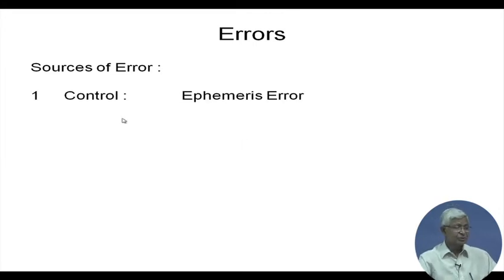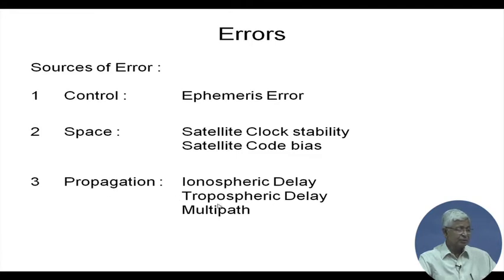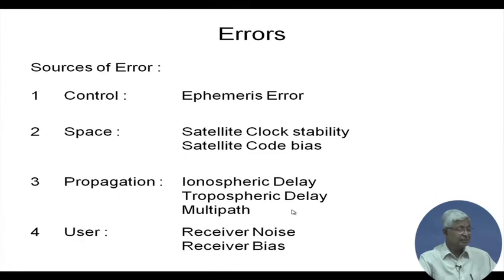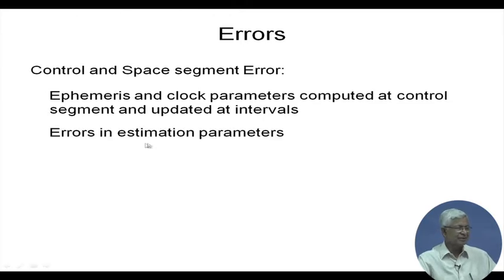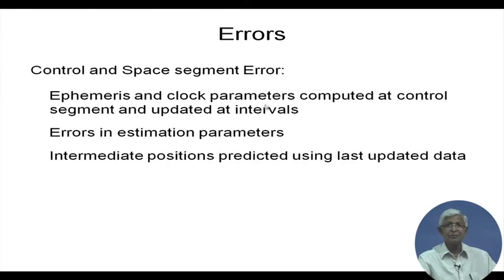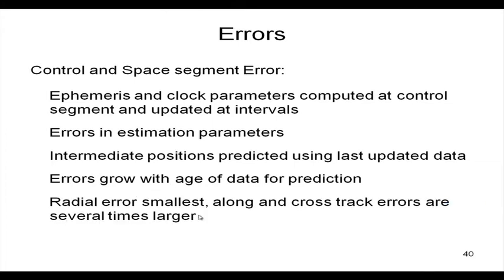Sources of error include: control error — ephemeris error; space error — satellite clock stability and clock code bias; propagation error — ionospheric delay, tropospheric delay, and multipath; and user receiver noise and receiver bias. The control and space segment error: ephemeris and clock parameters are computed at the control segment and updated at certain intervals when the satellite is visible to the control station. In between updates, the satellite slightly drifts. Intermediate positions are predicted using last updated data, and errors grow with age. The radial error is smallest; along and cross-track errors are several times larger.